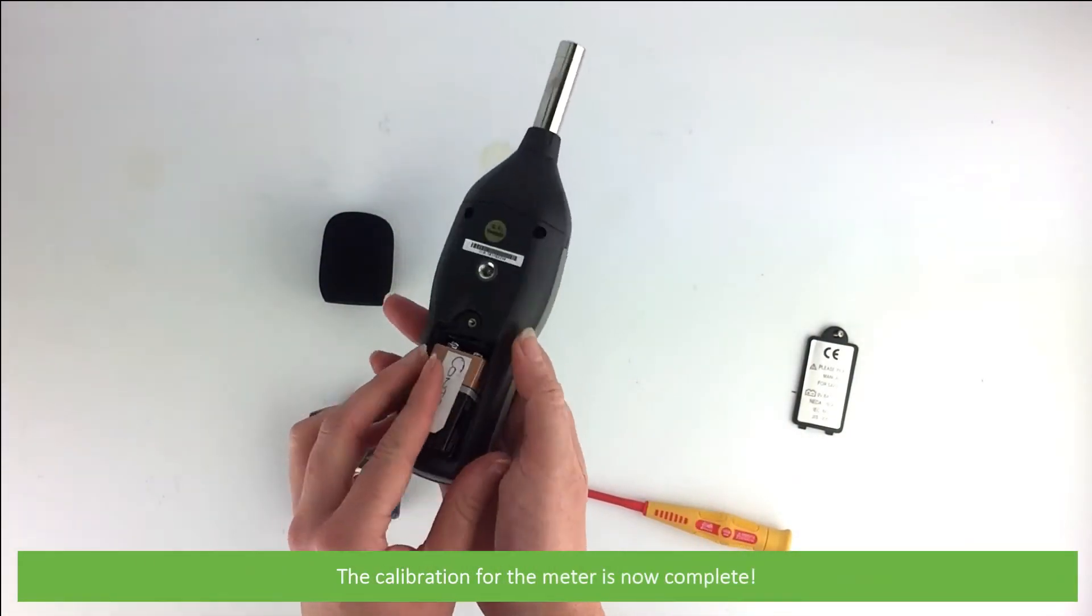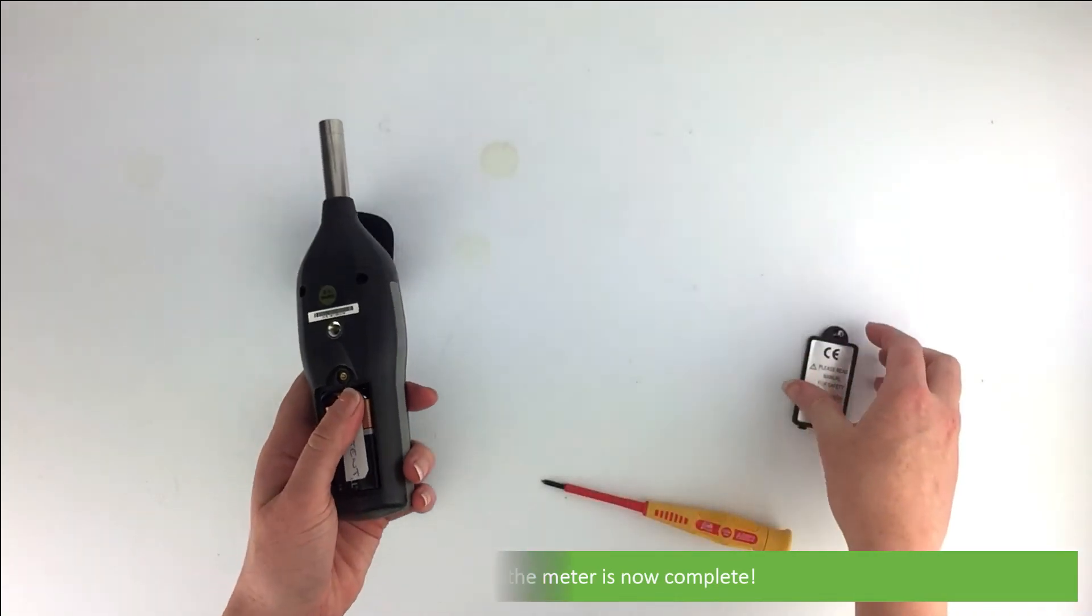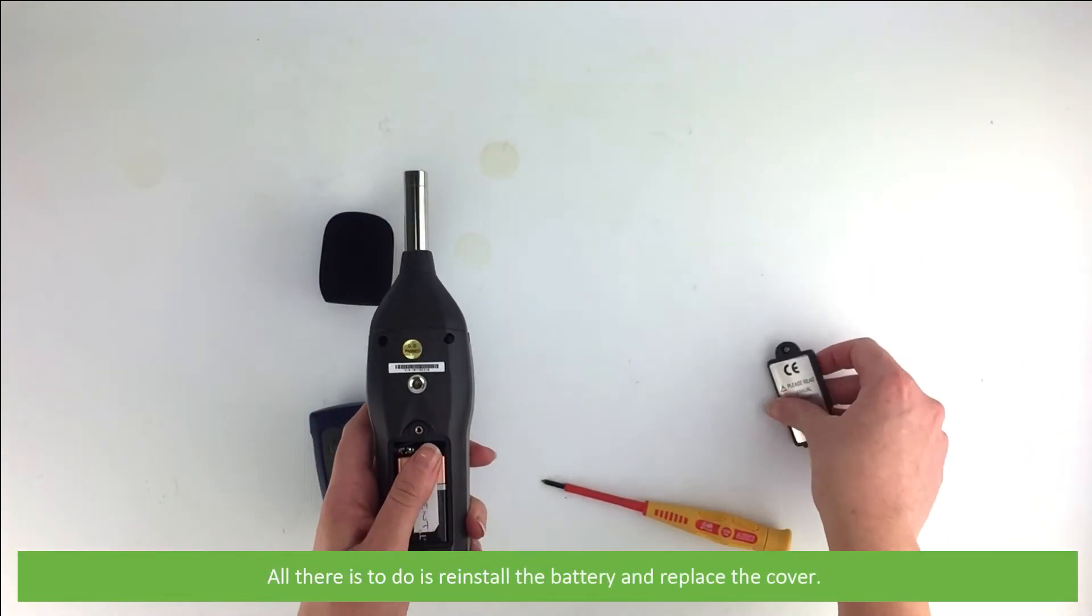The calibration for the meter is now complete. All there is to do is reinstall the battery and replace the cover.